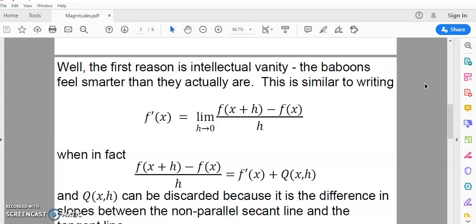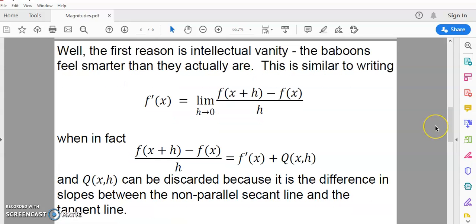The first reason is intellectual vanity. The baboons feel smarter than they actually are. Now, this writing x is an element of R is similar to writing this limit, the limit of h approaches 0, of this finite difference function. When, in fact, according to my theorem, this is true. And q(x,h) can be discarded because it is the difference in slopes between the non-parallel secant line and the tangent line.